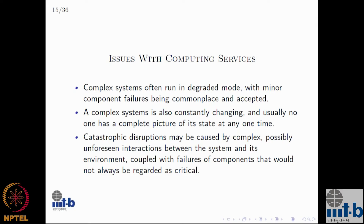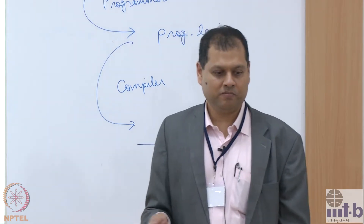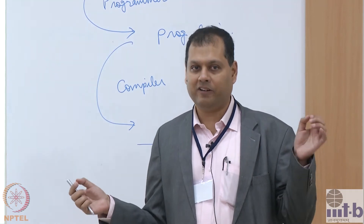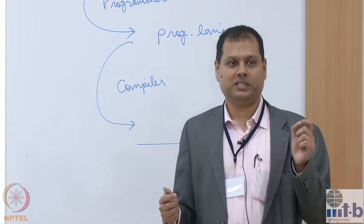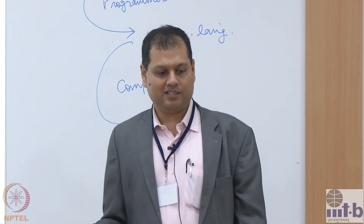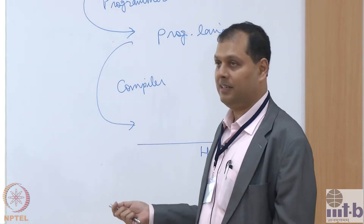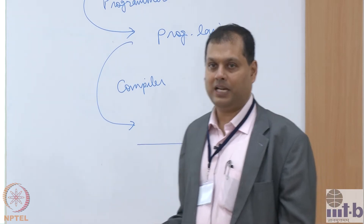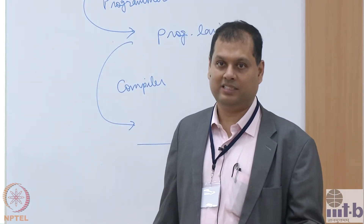In general, with computing services, you have large, complex systems which often run in degraded mode. In any large system, there is always some machine that is crashed or out of service. If you have a Boeing 747, you can never get it in the air if you need every light bulb to be working all the time. Such failures are commonplace and accepted. Complex systems are also constantly changing and nobody really understands the state at any one time. Sometimes catastrophic disruptions happen because of certain interactions between failures that nobody foresaw.